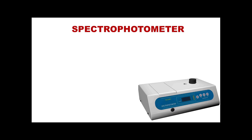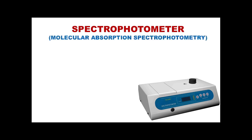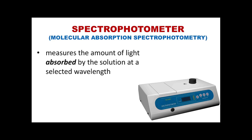The spectrophotometer was developed as a type of photoelectric colorimetry. It follows the principle of molecular absorption spectrophotometry and measures the amount of light absorbed by a solution at a selected wavelength — what we call absorbance. Take note that the spectrophotometer does not only measure absorbance, but also measures transmitted light, which we call transmittance.